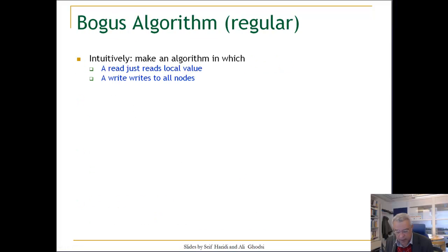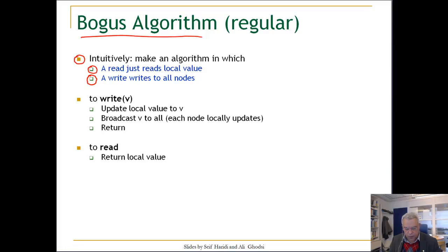Now let's go to fault-tolerant algorithms. We start by looking at an algorithm that is bogus—it is not correct, and later we modify this algorithm to make it correct. The basic idea is to make an algorithm where a read just reads the local value, whereas a write writes to all nodes. To perform a write on the register, you update the local value to V, trigger a best-effort broadcast request to all nodes.